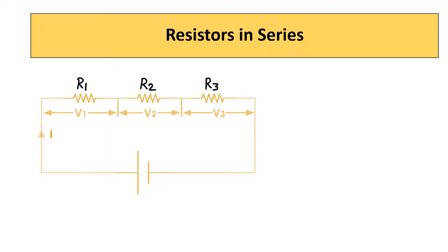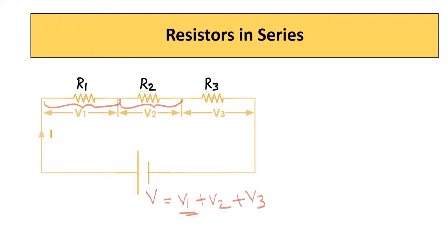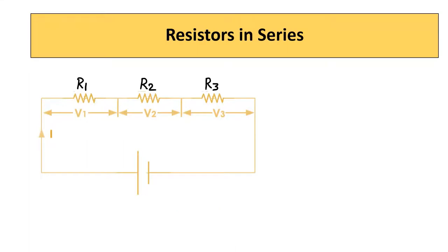Let us see what happens when resistors are connected in series. In the diagram, R1, R2, and R3 are connected in series. Let V be the voltage of this battery. This voltage V is equal to V1 plus V2 plus V3. V1 is the voltage drop across R1, V2 is the voltage drop across R2, and V3 is the voltage drop across R3. According to Ohm's law, V is equal to IR.